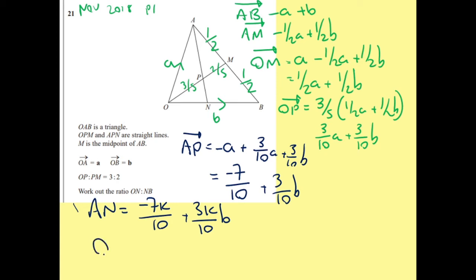Now I can work out what ON is. So it's going to be exactly what's on top just with an extra A. So it's going to be A plus negative 7K over 10 A plus 3K over 10 B.